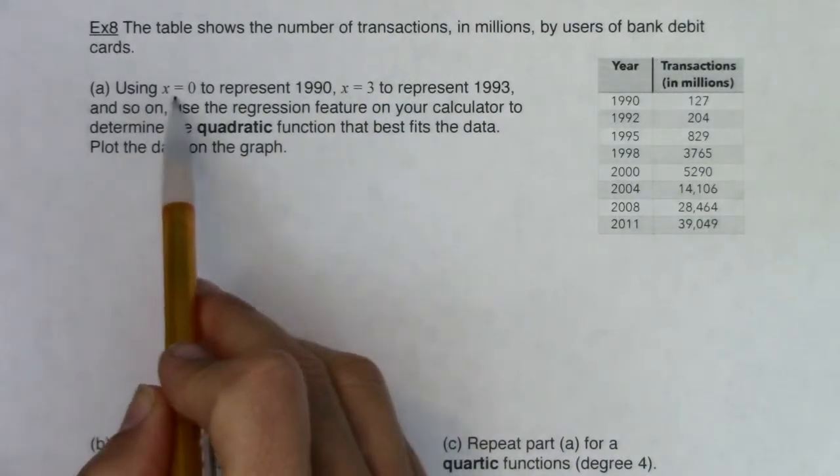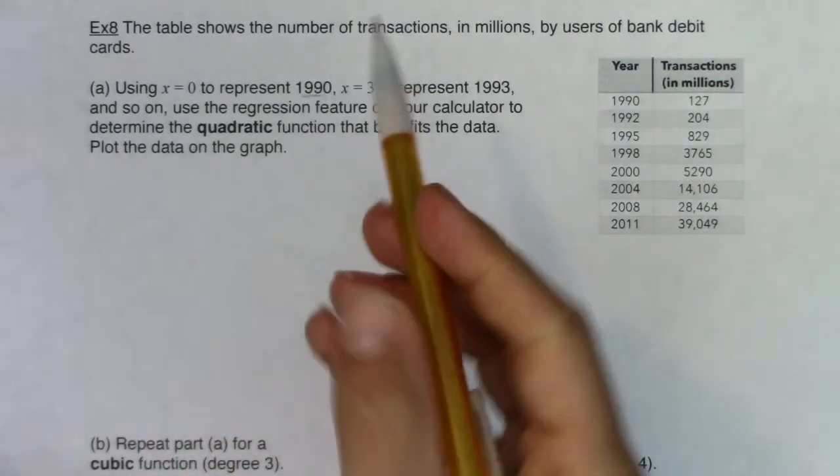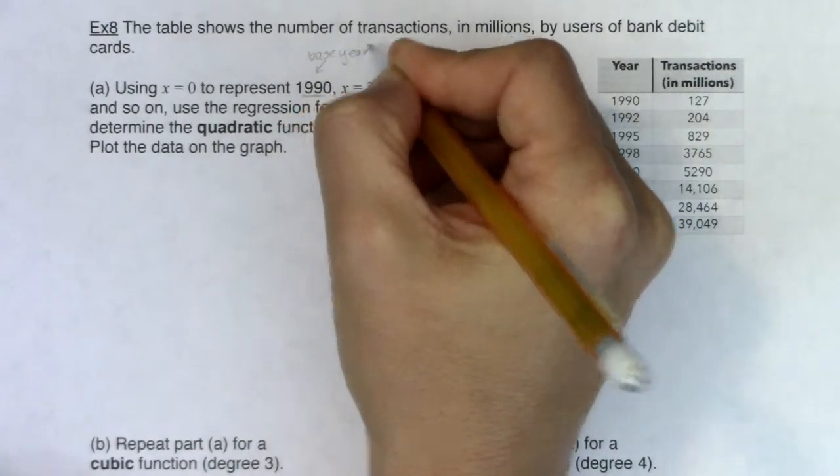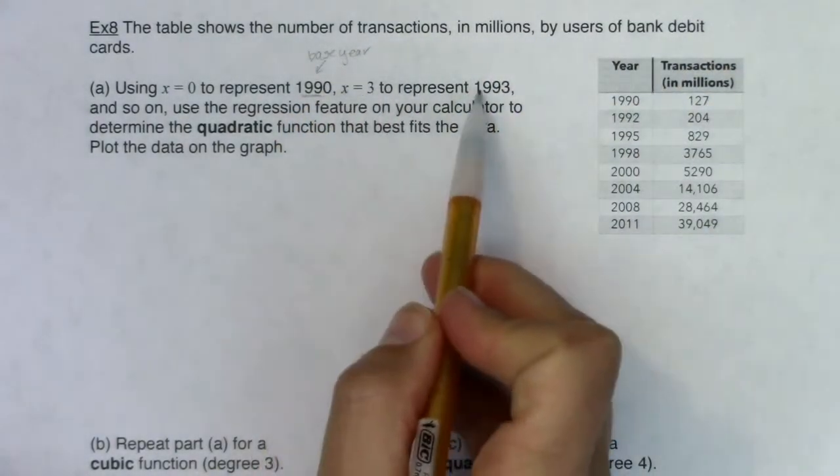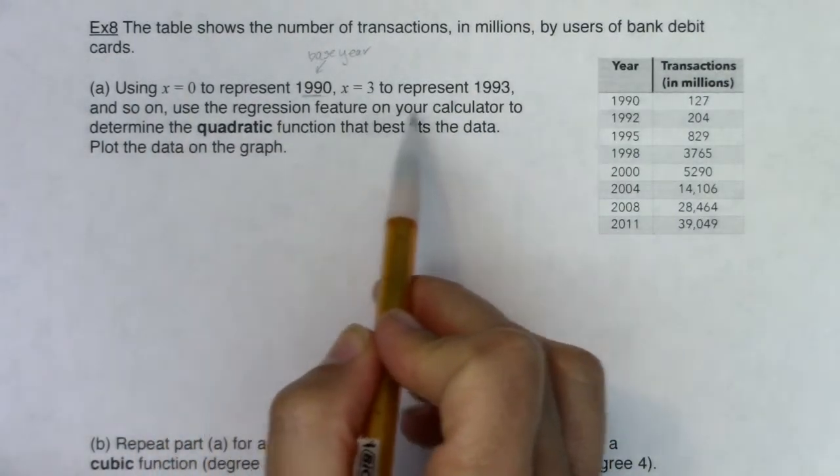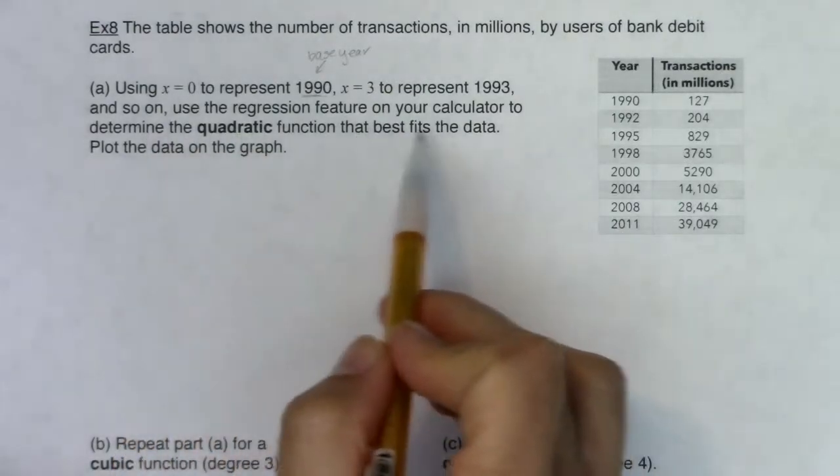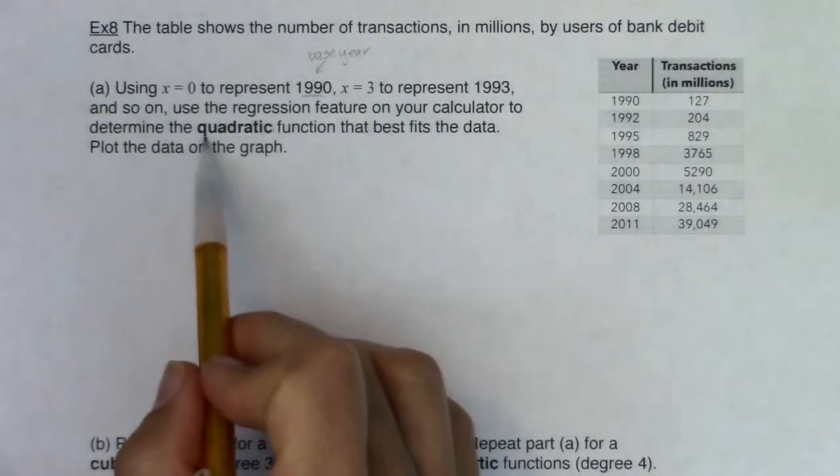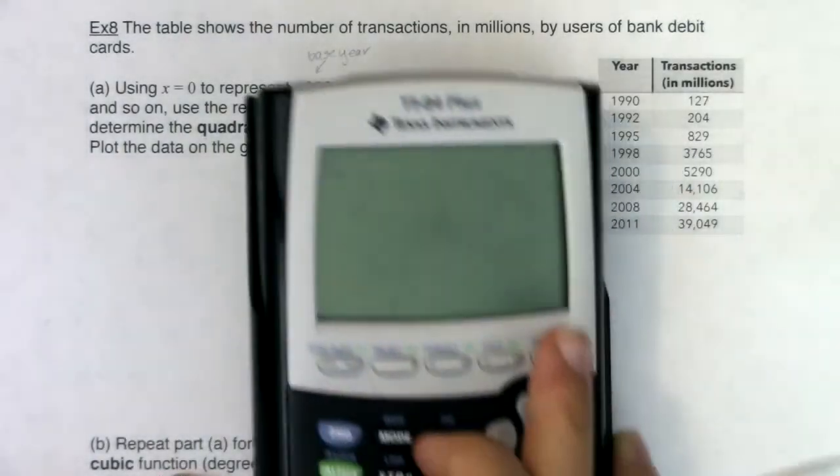Let's take a look at what is being asked of us. It says using x equaling zero to represent 1990, x equaling three to represent 1993, and so on. Use the regression feature on your calculator to determine the quadratic function that best fits the data and plot the data on the graph. So this wants me to get a quadratic function. Let me go over to my calculator.